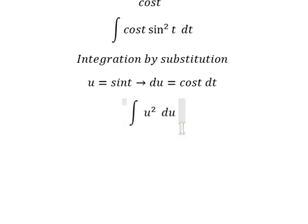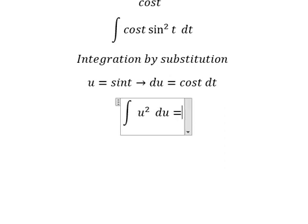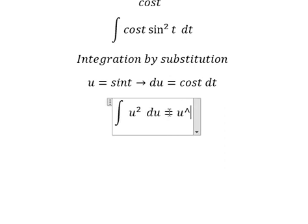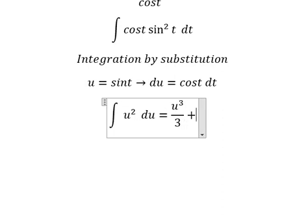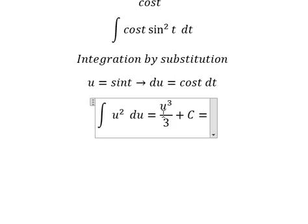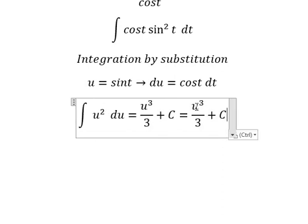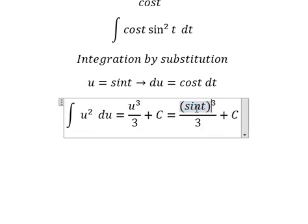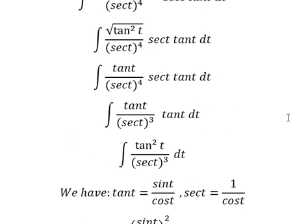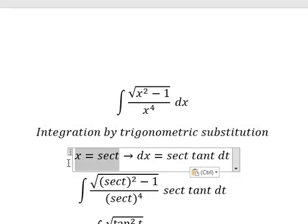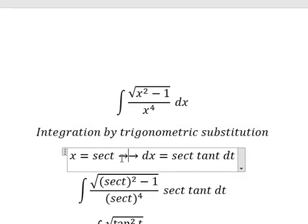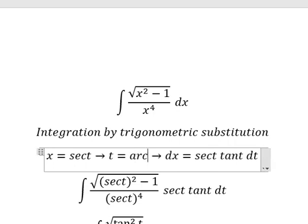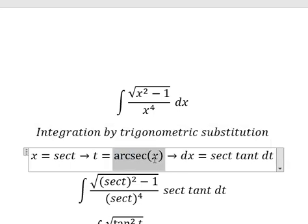The integration of this expression gives u to the power of 3 over 3, plus C. And u equals sin(t). For t, we have t equal to arcsec(x), so I will substitute this back to change for t.